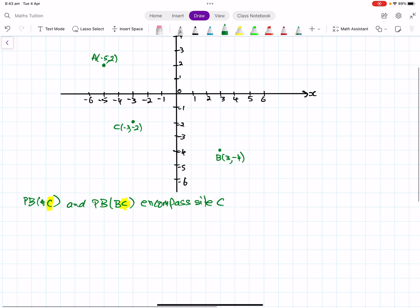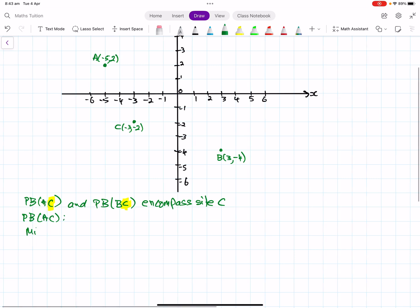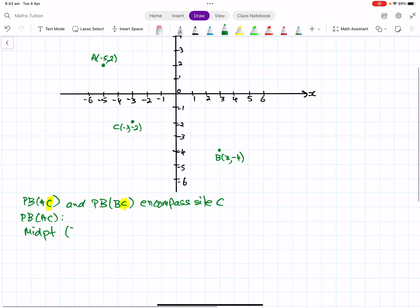So let's start off with AC. So we'll put this underneath here, the perpendicular bisector of AC. All we need to do is work out the midpoint, which is the average of the x's, so that's negative 5 plus negative 3 over 2. And the average of the y's, 2 plus negative 2, that's going to give us 0 over 2. So that gives us negative 8, negative 4, negative 8 divided by 2, and 0.